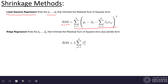Here's how ridge regression works. We do something very similar to least squares regression: we want to find the coefficients that minimize the residual sum of squares error plus a penalty term. The formula is RSS plus a penalty term.